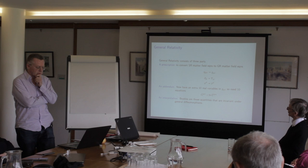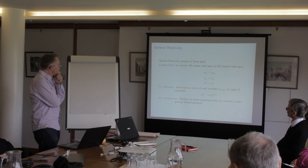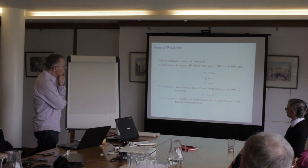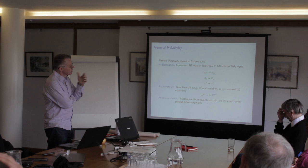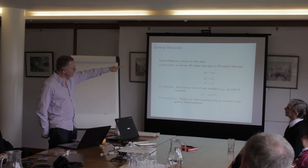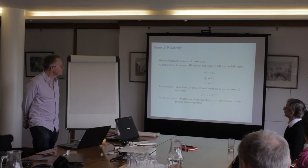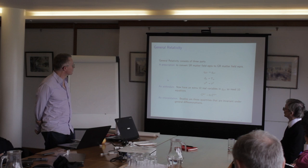General relativity can be thought of as consisting of three different parts. First, there's a prescription — a prescription for converting special relativistic matter field equations, expressed in a global inertial reference frame, into general relativistic matter field equations in a general reference frame. To do that, you have to change the equations: you go from a Minkowski metric to a general metric, from partial derivatives to covariant derivatives, and you make all the coordinates general coordinates.